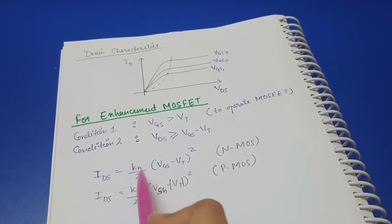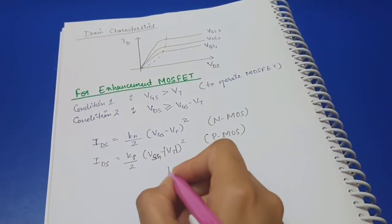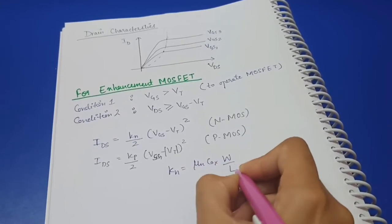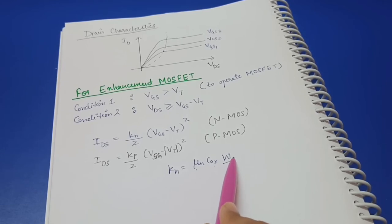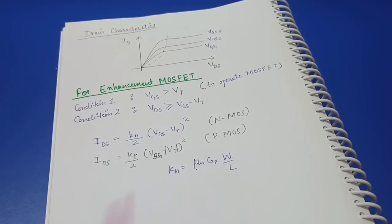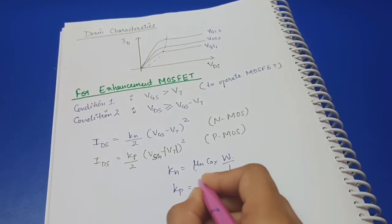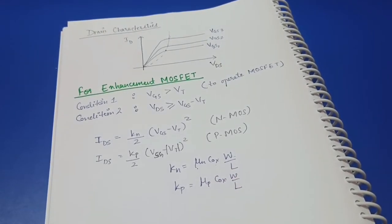KN and KP are the transconductance parameters of the MOSFET. KN is given by μN * COX * (W/L), where μN is the carrier mobility, COX is the oxide capacitance, W is the channel width, and L is the channel length. Similarly, KP is given by μP * COX * (W/L). That covers the key formulas.